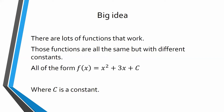When we write our general function, we will write it in the form f of x equals x squared plus 3x plus capital C, where capital C can stand for any constant that we want. All of the functions from our last example that have derivative 2x plus 3 will look like x squared plus 3x plus some constant.